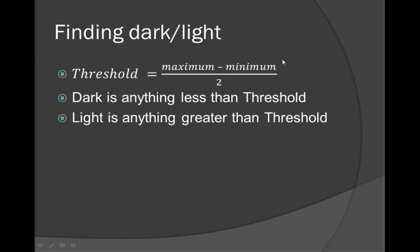The equation to define what the threshold is is up here, which is really the maximum value that you can receive minus your minimum value. That should be a plus. Maximum value plus minimum value divided by two. It's really your average value.